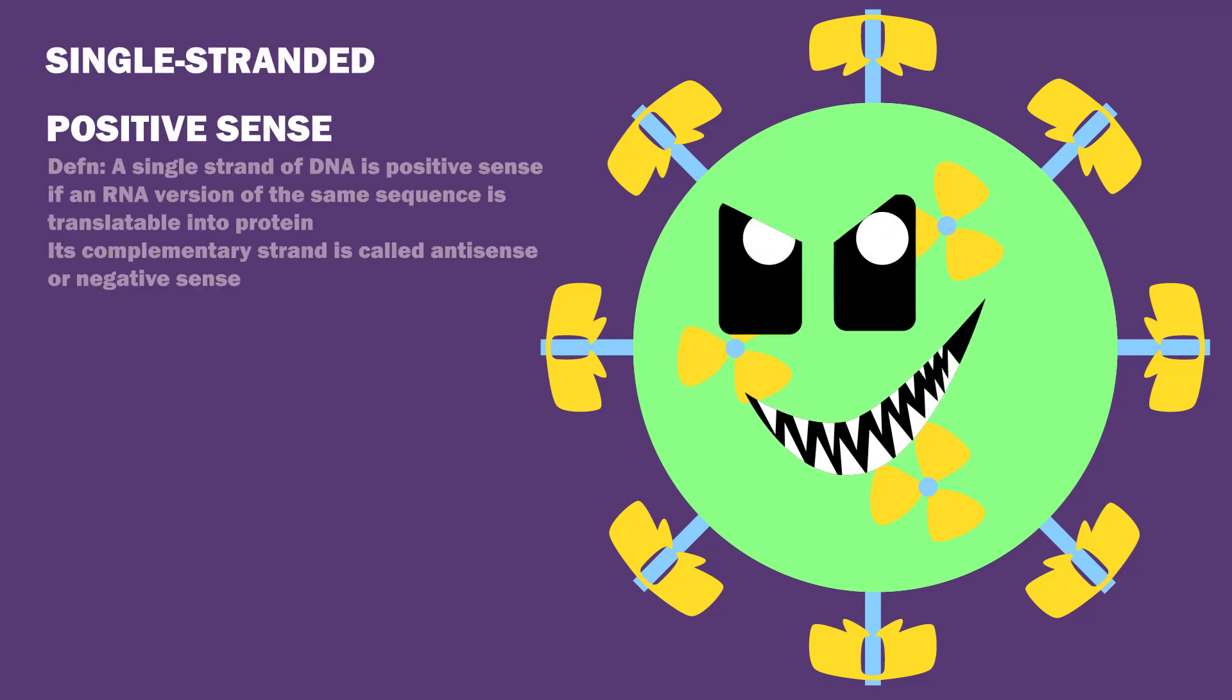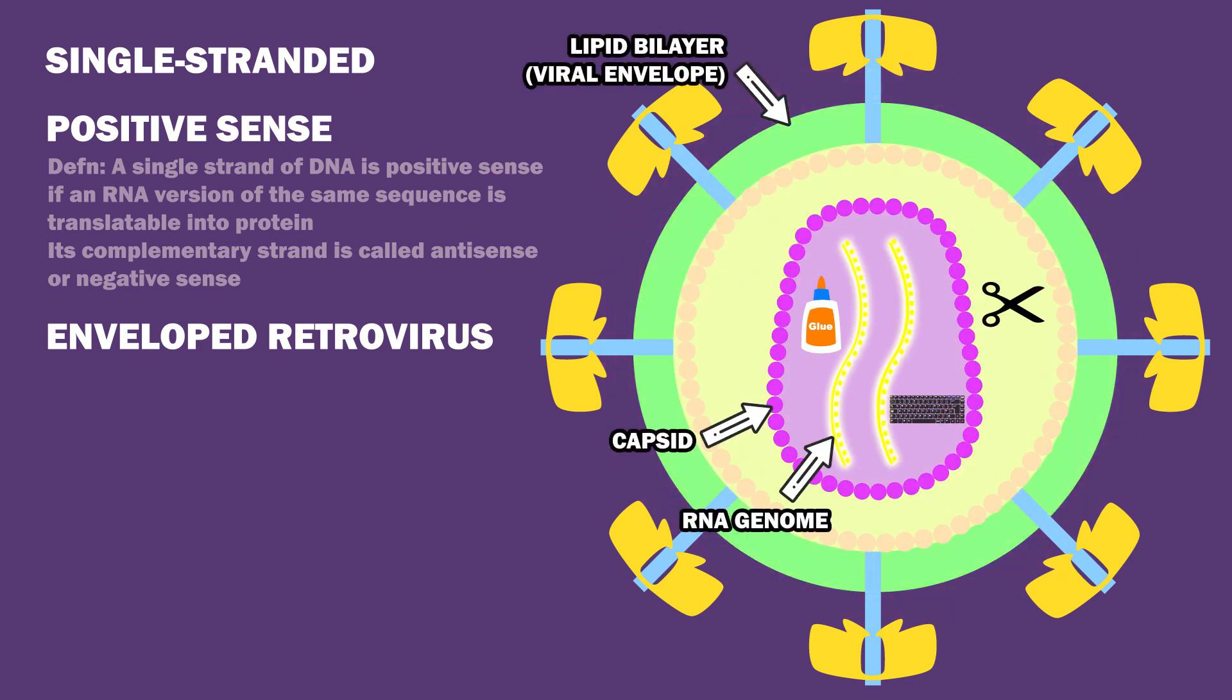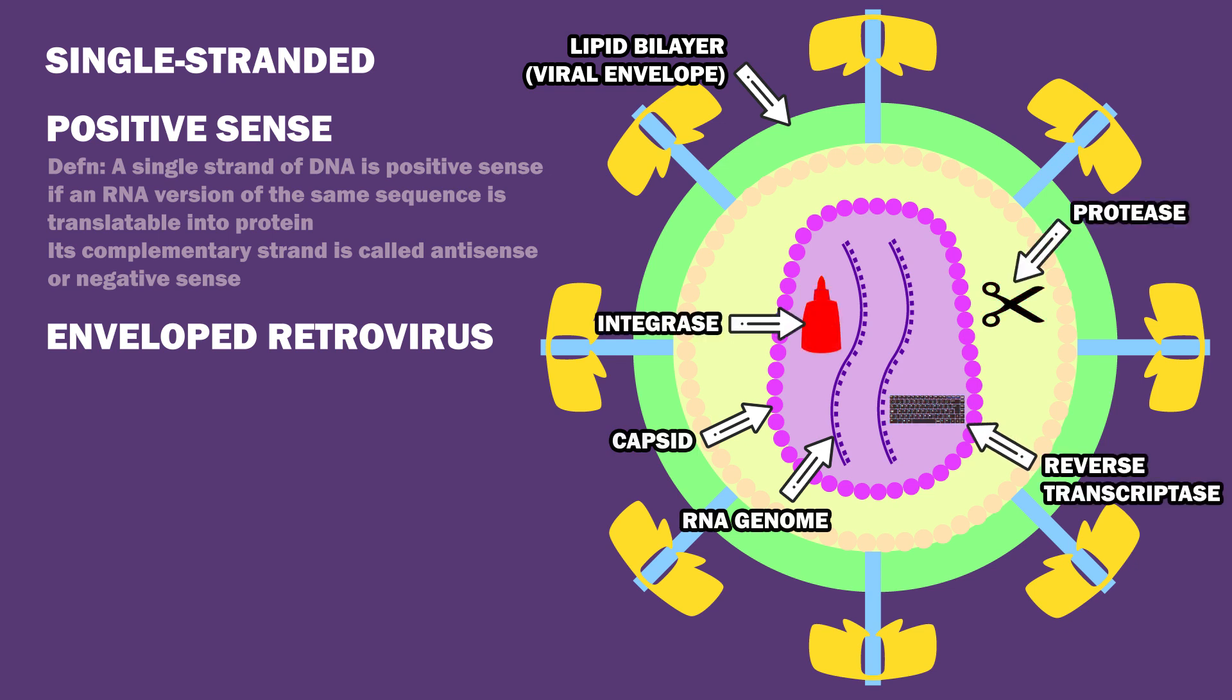HIV is a single-stranded, positive-sense enveloped retrovirus. Each virion is made up of a lipid bilayer with a capsid inside it, containing two copies of an RNA genome, as well as reverse transcriptase, protease, and integrase.